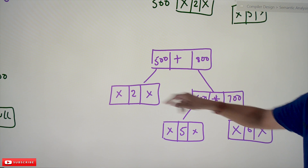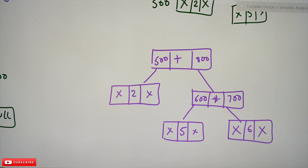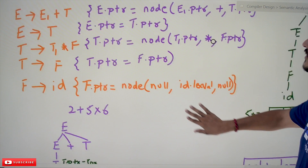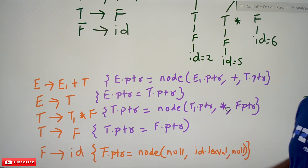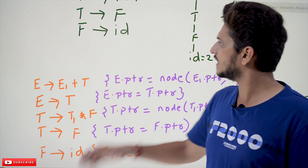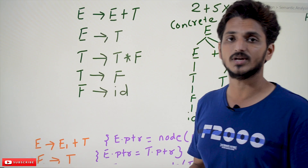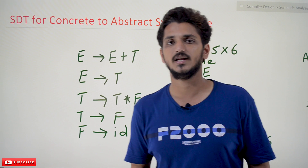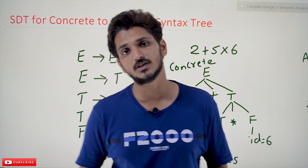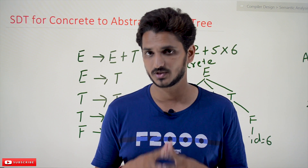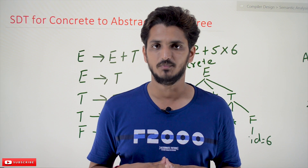So during the syntax analysis phase, by adding semantic conditions, we perform syntax directed translations needed for semantic and other phases — such as three-address code generation in the next phase. This is one example for better understanding of syntax directed translation. Hope you understand the concept. If you have any questions, please post them in the comment section below. Thanks for watching. If you haven't subscribed, please subscribe and press the bell icon for the latest updates.